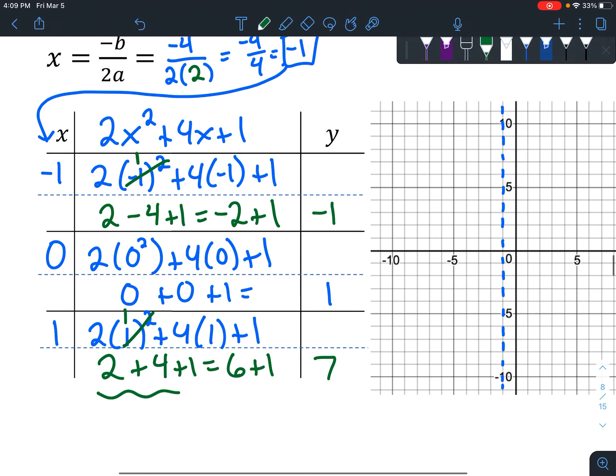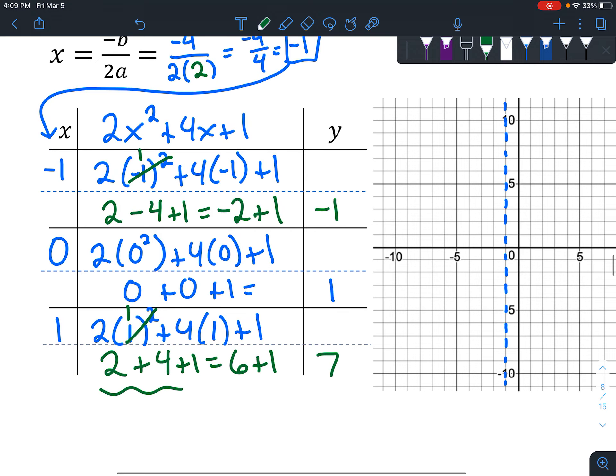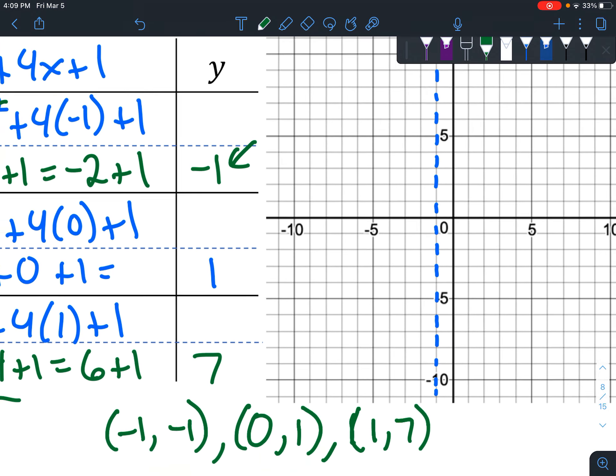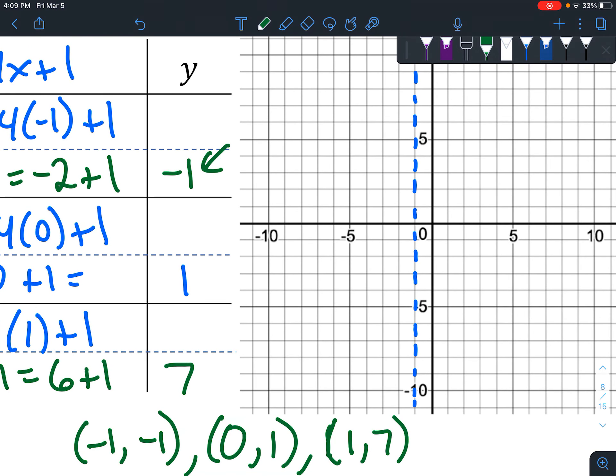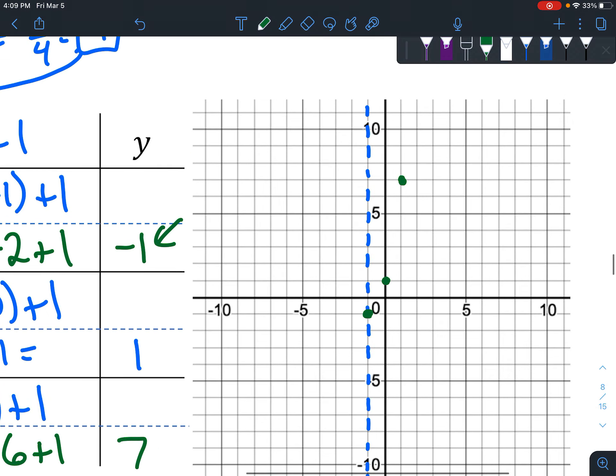So let's graph each of these. I guess it might help. I'm going to list the ordered pairs really quick. So this is your input and this is your output. So it's going to be input of negative 1, output of negative 1. And then next we have 0, 1, and then 1, 7. All right, let's graph this. So negative 1, negative 1 is right here. 0 means you don't go left or right at all, but you go up 1. And then over 1 to the right, up 7, put a dot.